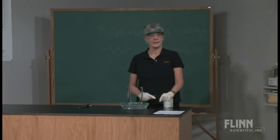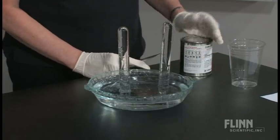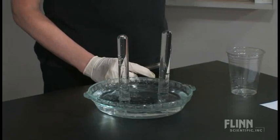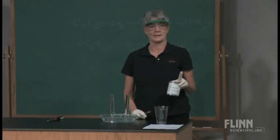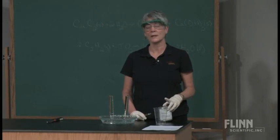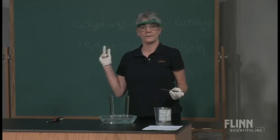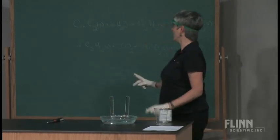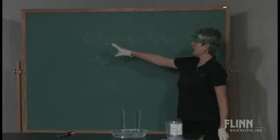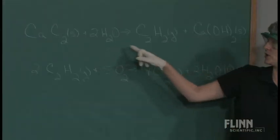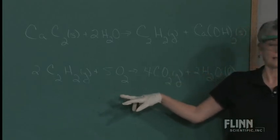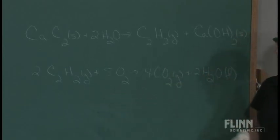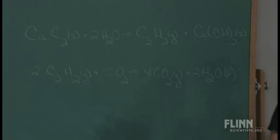What I have is two large test tubes that are just full of water in a pie dish, and I'm using calcium carbide. Now calcium carbide reacts with water to produce acetylene gas. If you look at the board behind me, what I'm really doing is I've got the calcium carbide generating the acetylene gas, and then I'm going to burn the acetylene gas. So that's what's going to happen with the gas that I collect in the test tube.